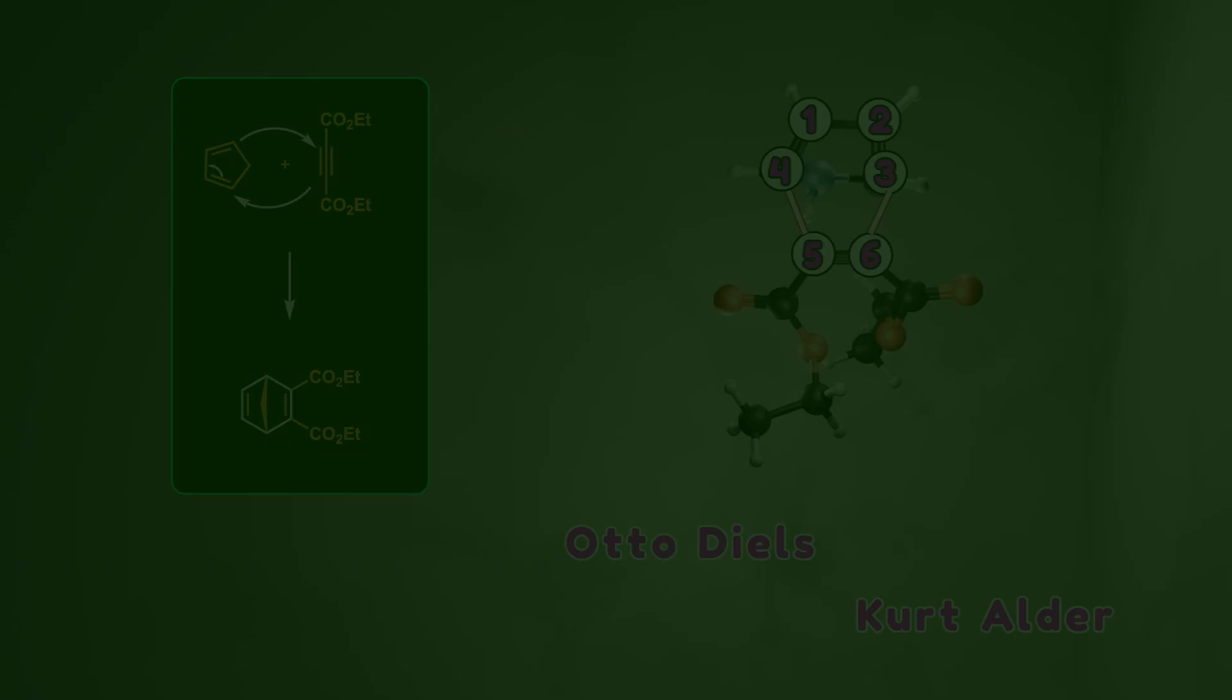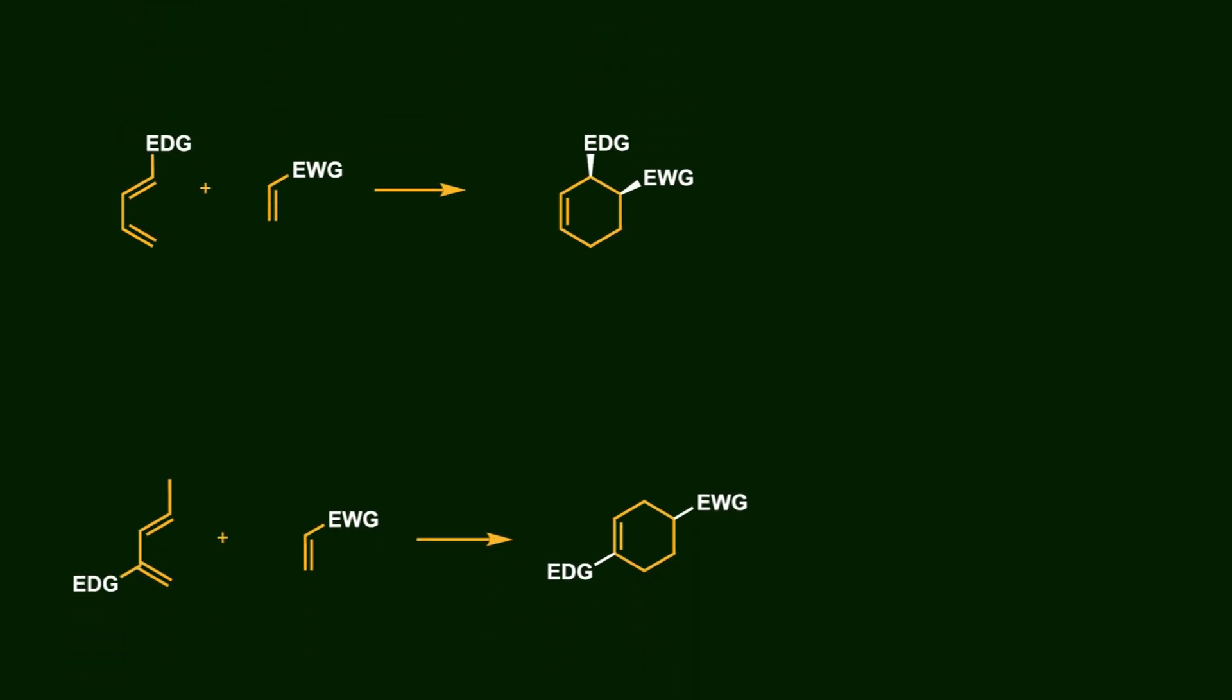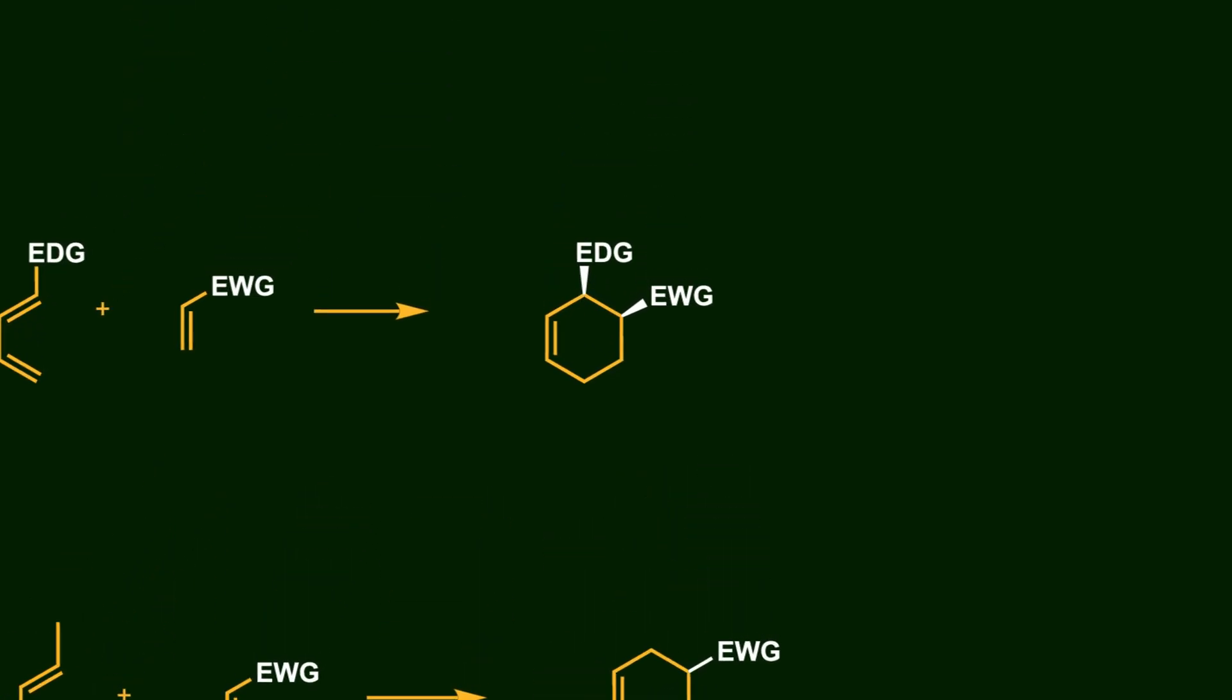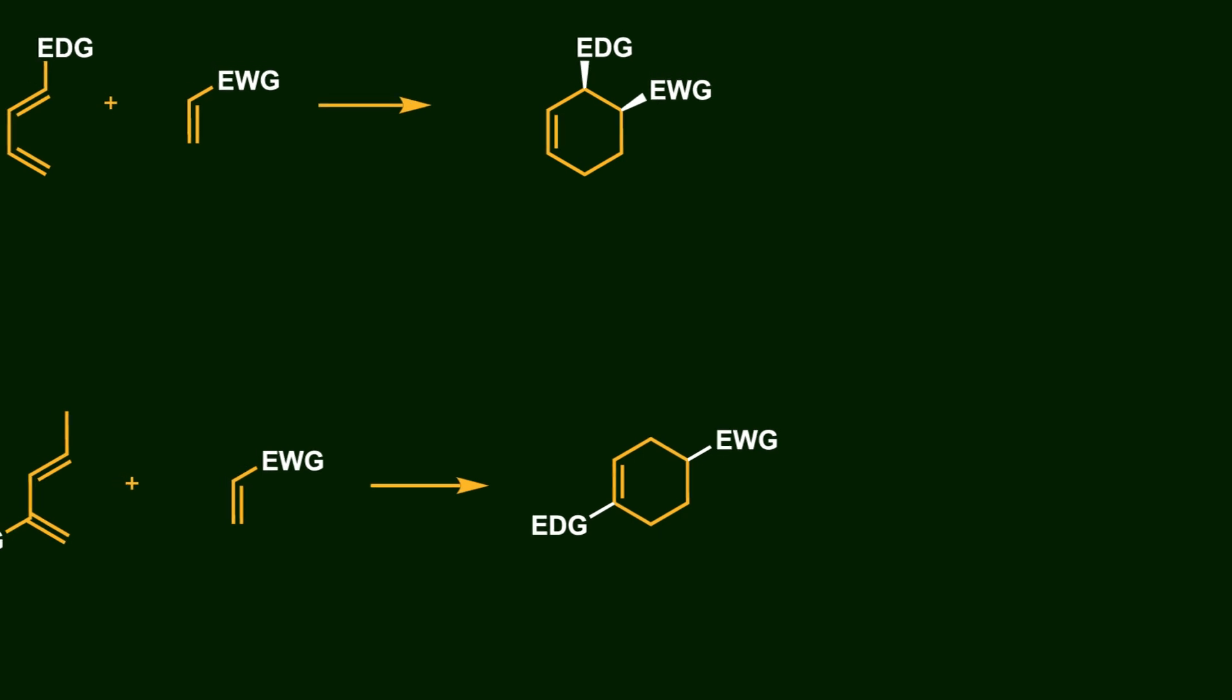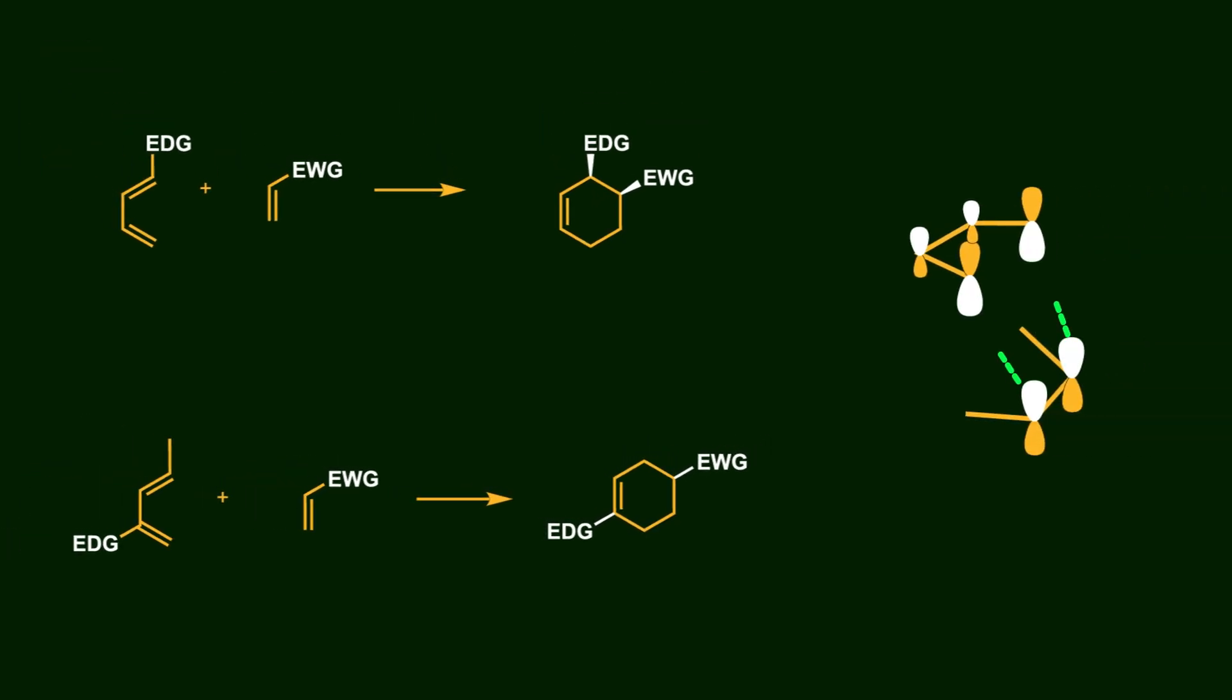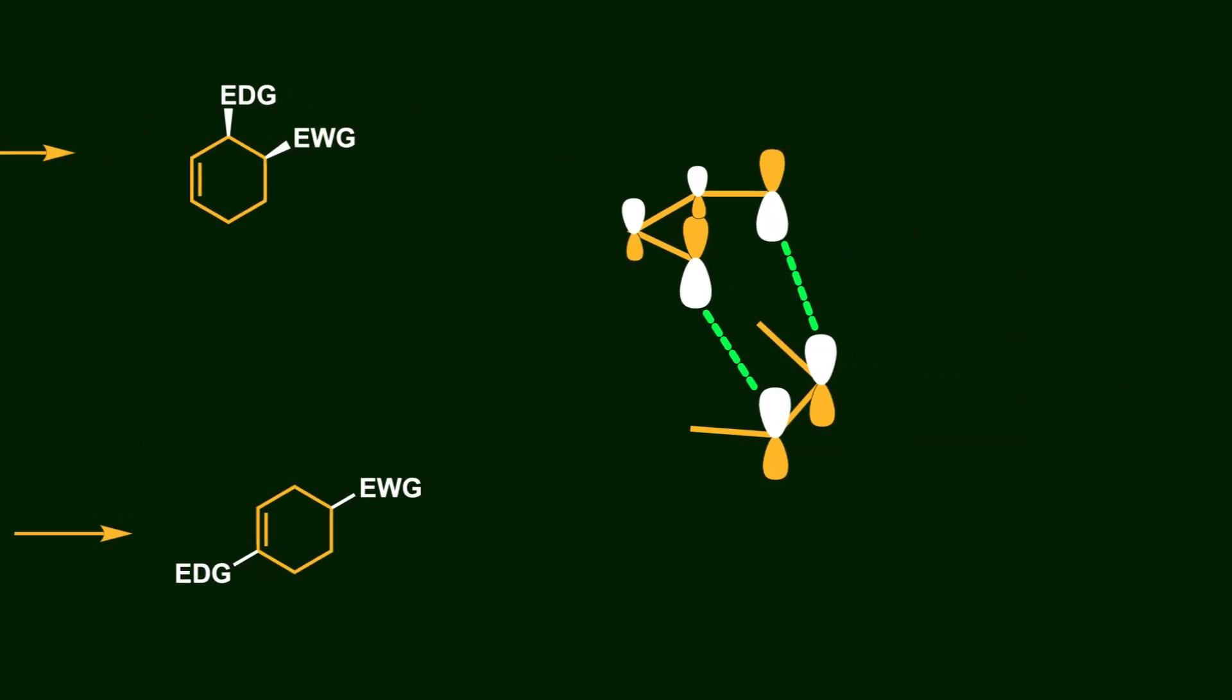The Diels-Alder reaction allows organic chemists to create six-membered rings with high control over regio and stereoselectivity. In this reaction, a total of six pi electrons participate in the transition state to form the cyclic product.